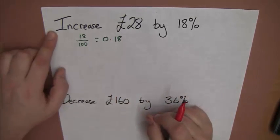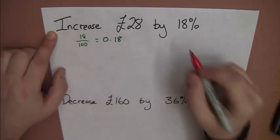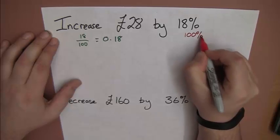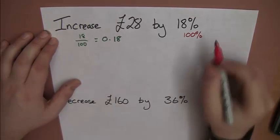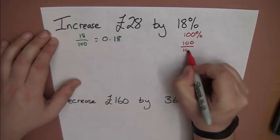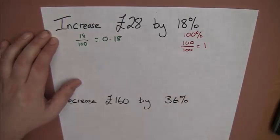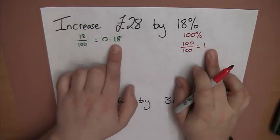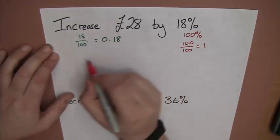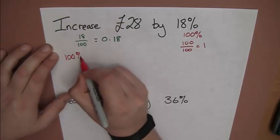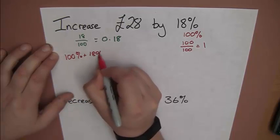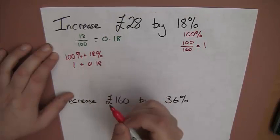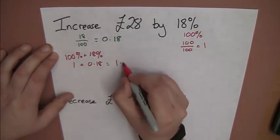Now, we're asked to increase. Now, all prices, original prices, are 100%. What's that as a decimal? Well, 100 out of 100 equals 1. So, we're adding 18% on. So, that's going to be 100% plus 18%. Well, that's 1 plus 0.18, which equals 1.18.